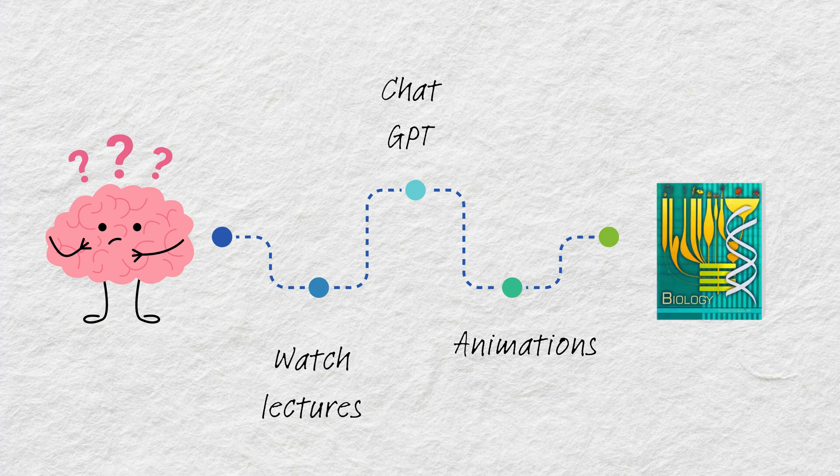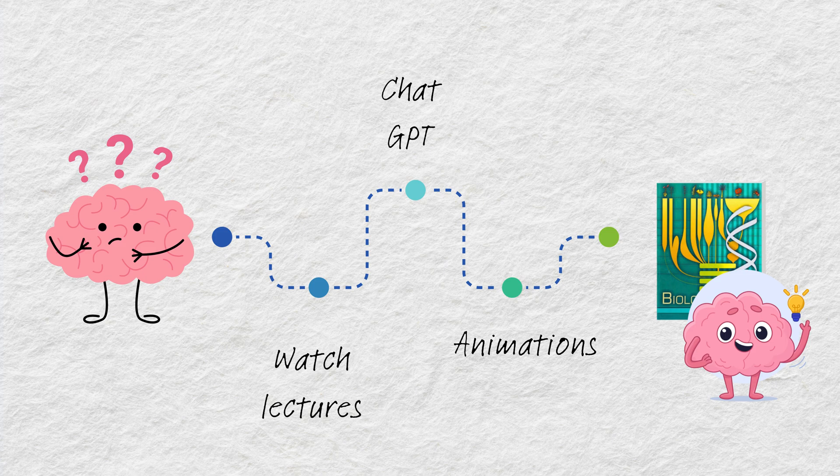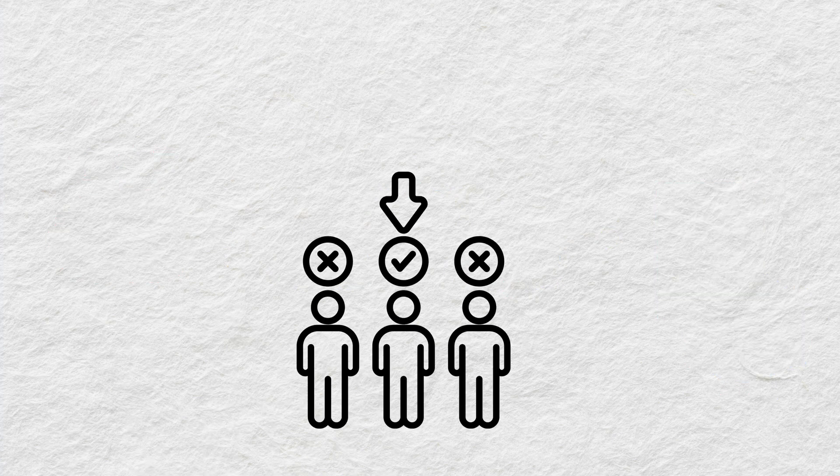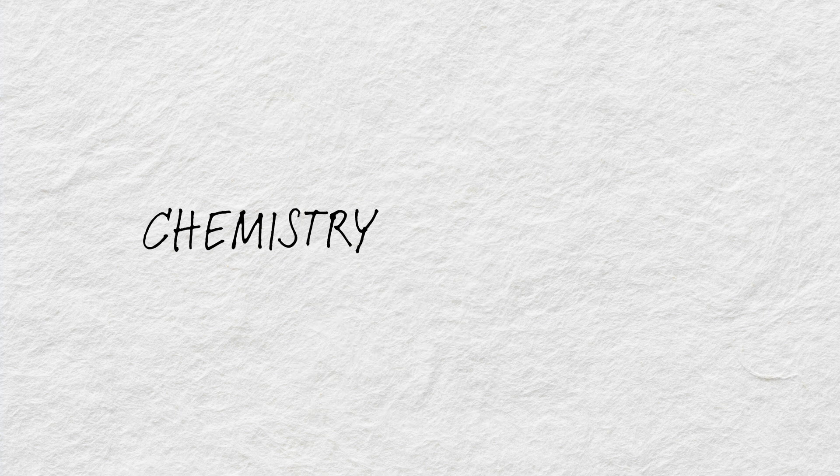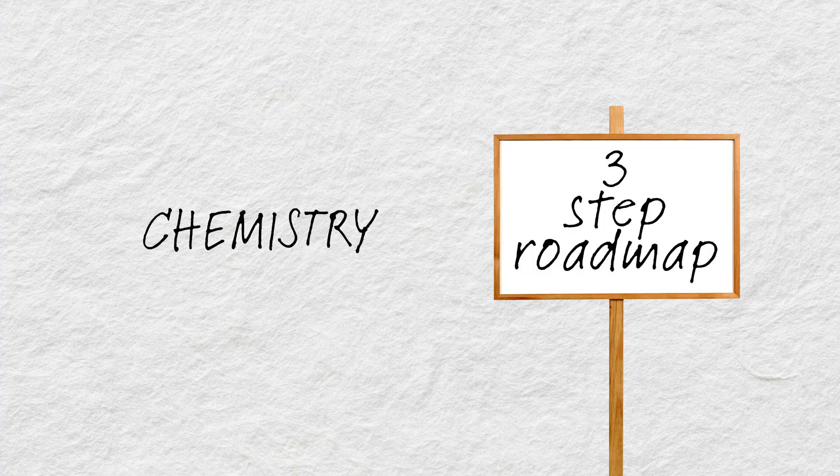Once the concept is clear, now go back to NCERT and suddenly, it will start making complete sense. Because NEET doesn't test who read NCERT, NEET tests who truly understood NCERT. And for chemistry, here is the 3 step roadmap toppers follow.